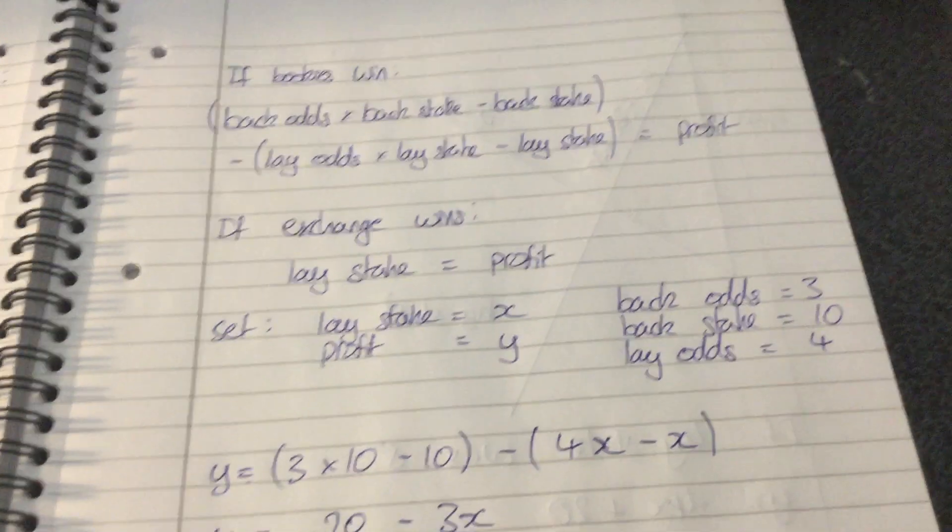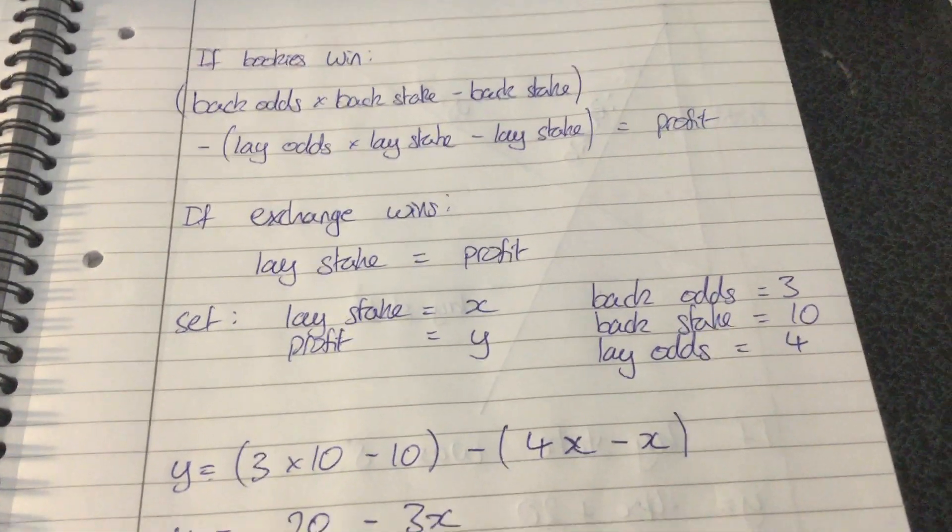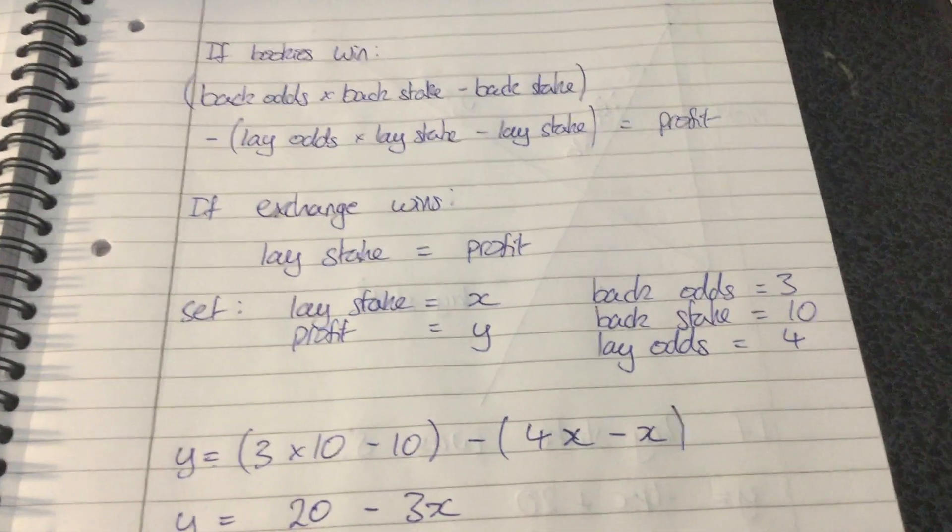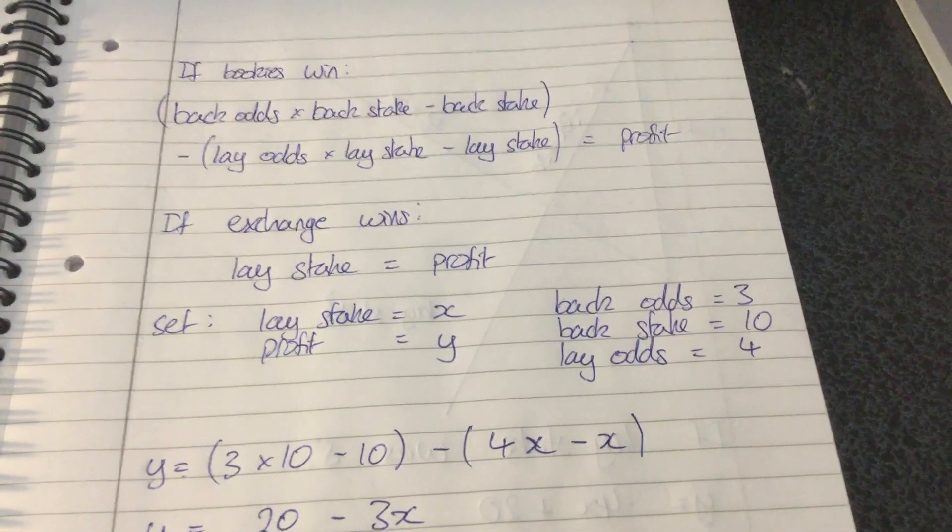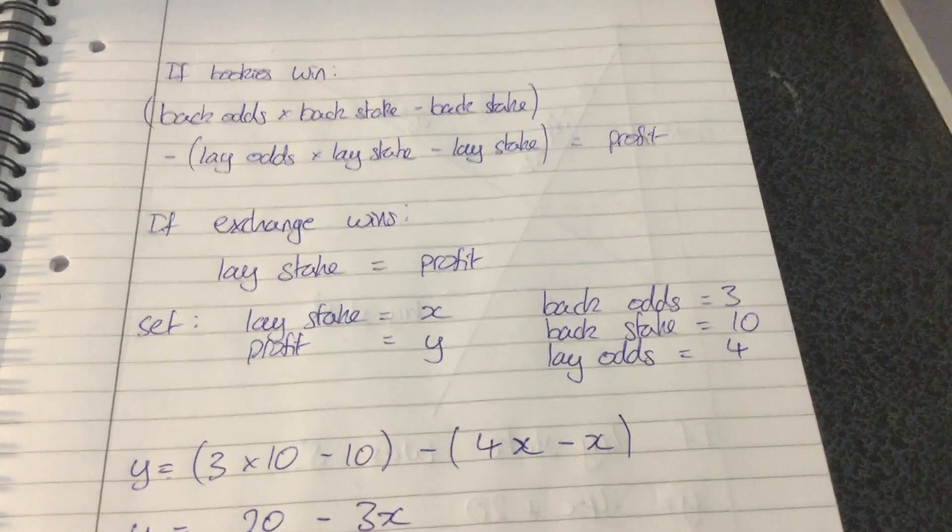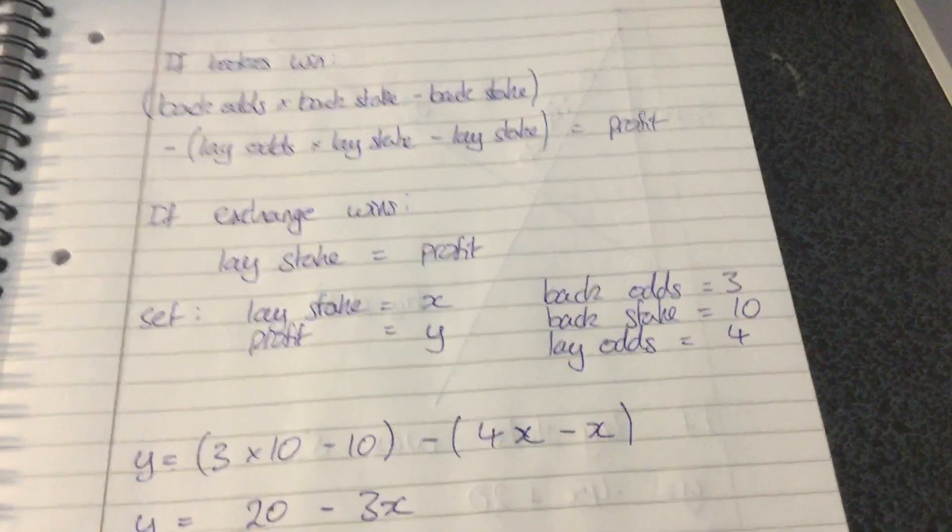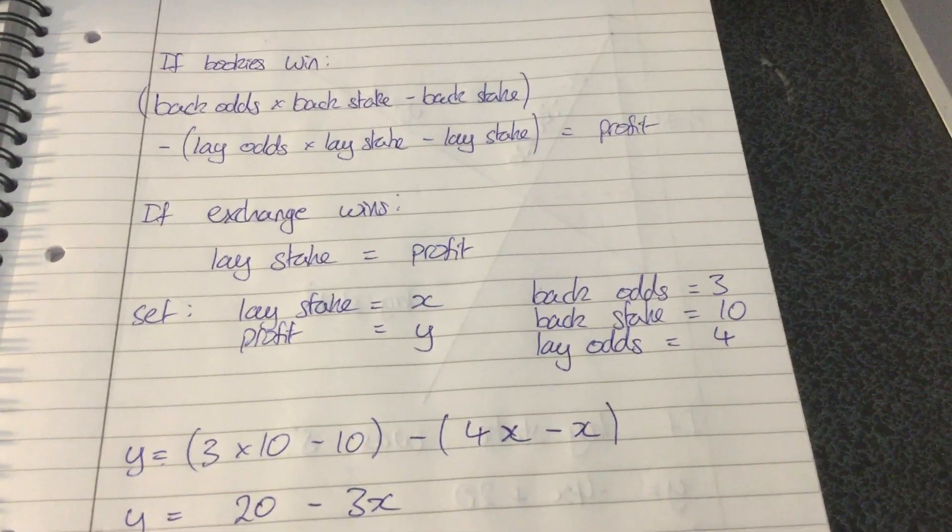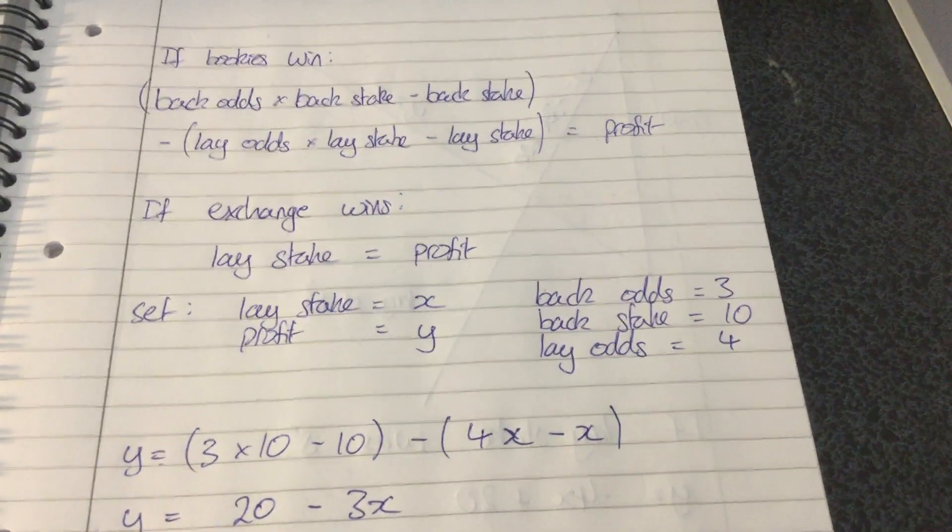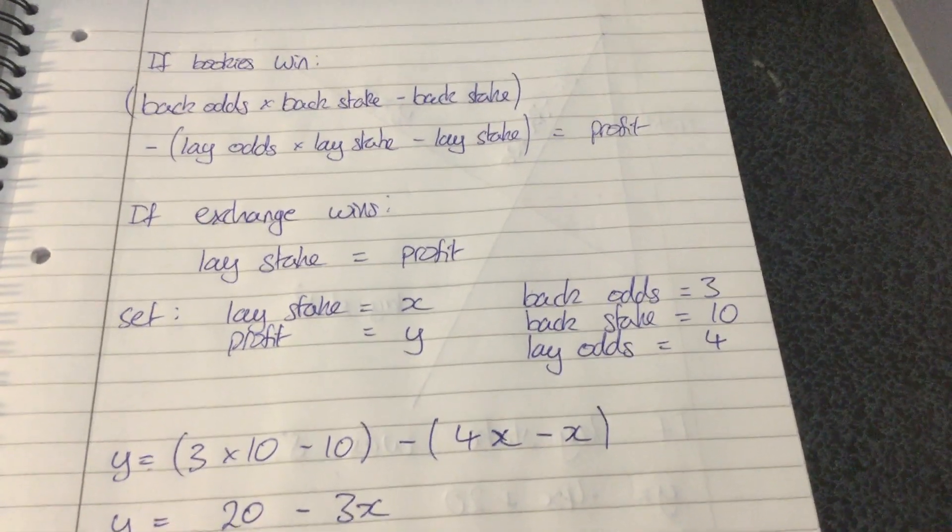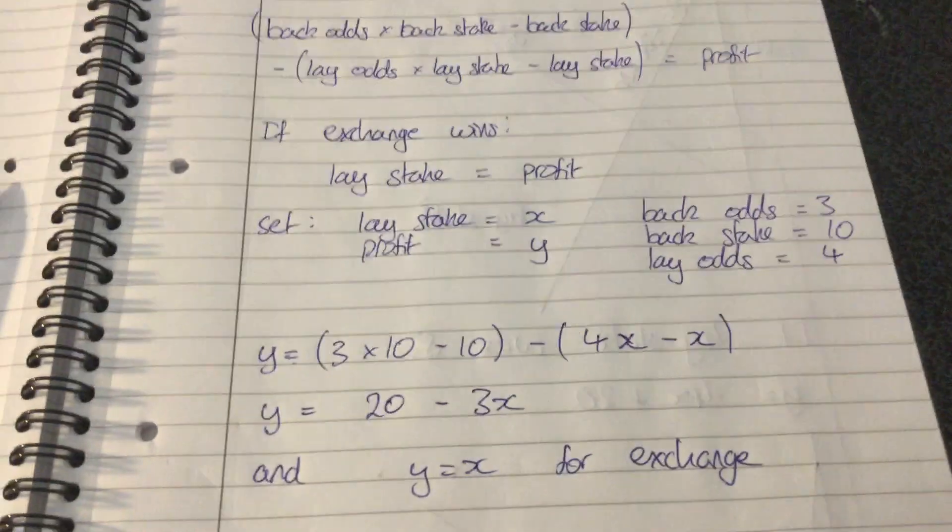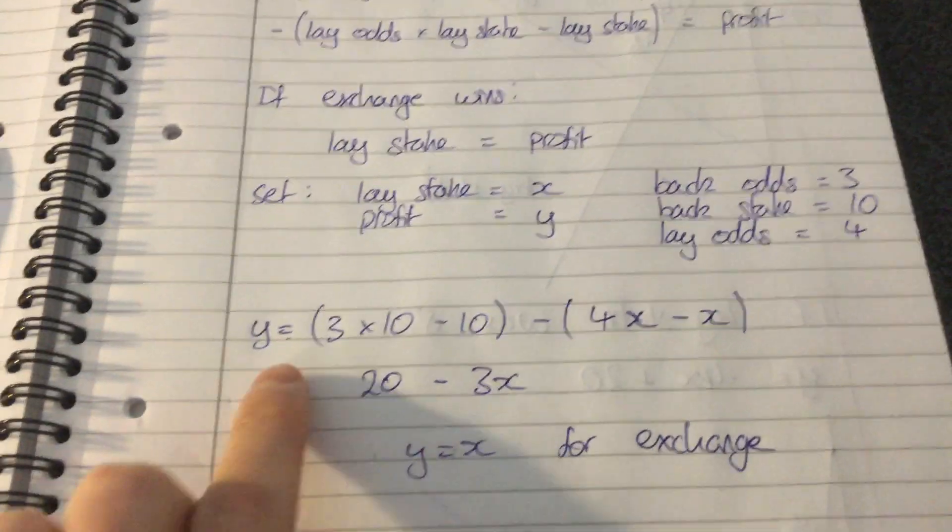Moving down, if we now set the lay stake to x because that's what we're trying to find out, it's an unknown. And the profit we also don't know, we'll set that to y. But those three numbers are what we're given from the bookies and the exchange, so we know what they are. I've just picked some random numbers there to show you an example.